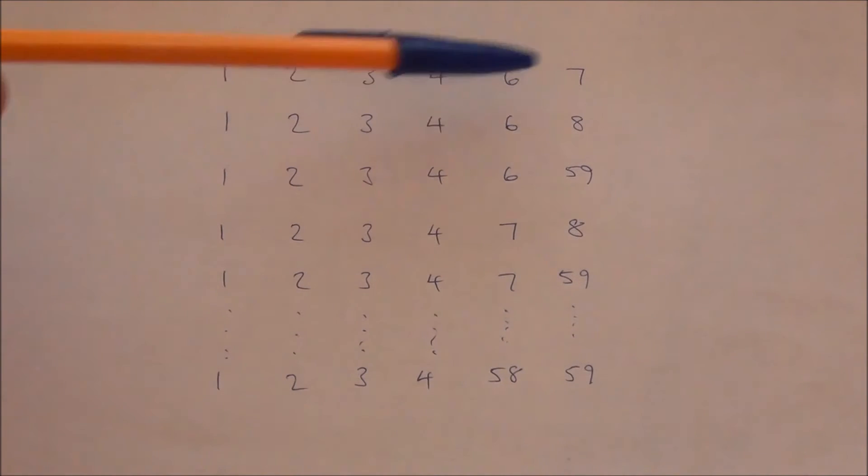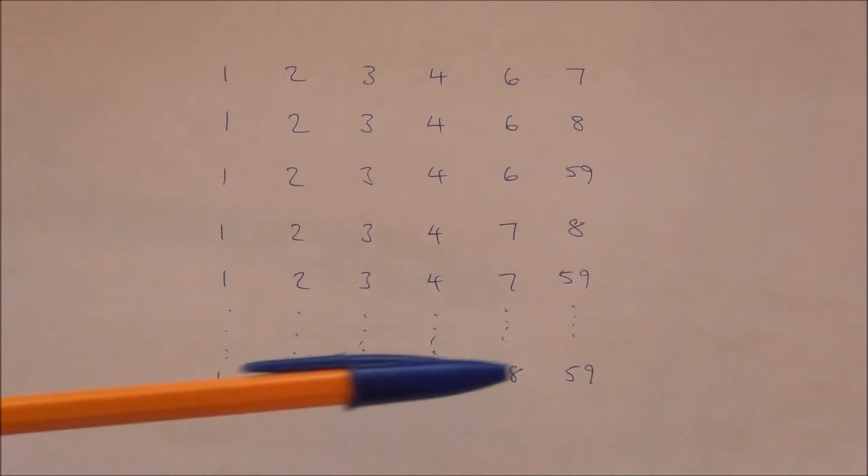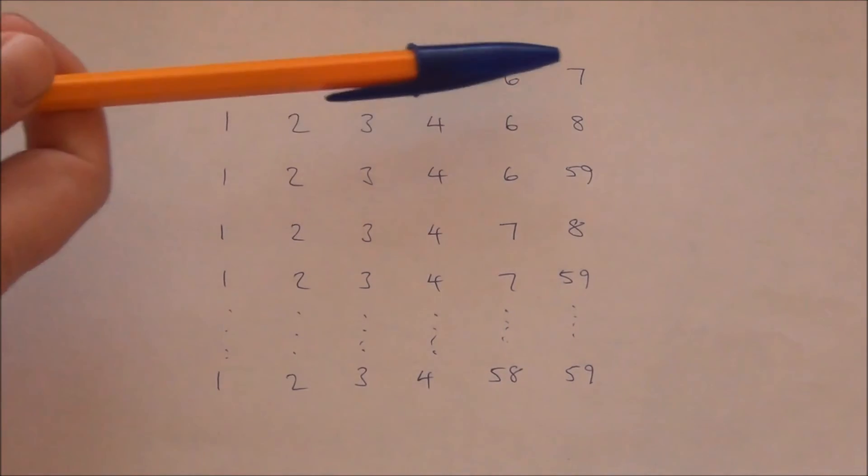But, say we could have 6, 7 as our extra 2 numbers, or 6, 59, 7, 8, 7, 59, all the way up to 58, 59. So, we need to work out how many there are of those. Well, there are 54 possible numbers, from 6 to 59.